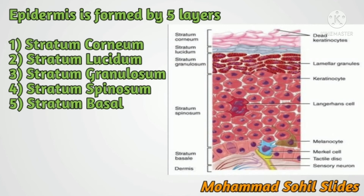Melanocytes are scattered between the keratinocytes and produce the pigment called melanin. The color of skin depends upon melanin. Langerhans cells are a specialized form of dendritic cells and are responsible for protective immune reactions.